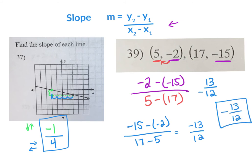One negative means your whole fraction is negative; two negatives means it's positive. Also, I saw on your quiz that you did not reduce. If you can reduce, reduce. This one can't, but had it been four twelfths I'd want you to reduce it — and if you don't, you'll lose points. Do not change it to a mixed number; leave it as an improper fraction. Your slope needs to be a fraction, not a mixed number.